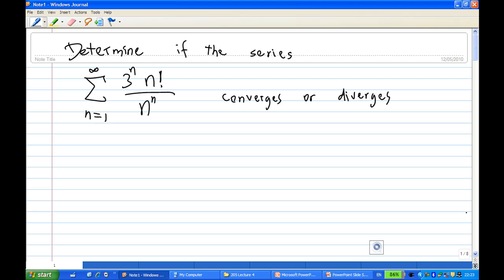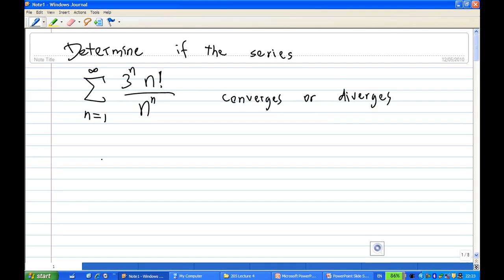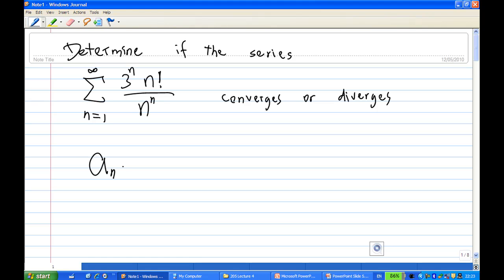So in this case I'm going to look at the terms. All the terms are positive, so a n is equal to 3 power n times n factorial over n power n. And then the next term a n plus 1 is equal to 3 power n plus 1 times n plus 1 factorial over n plus 1 raised to power n plus 1.